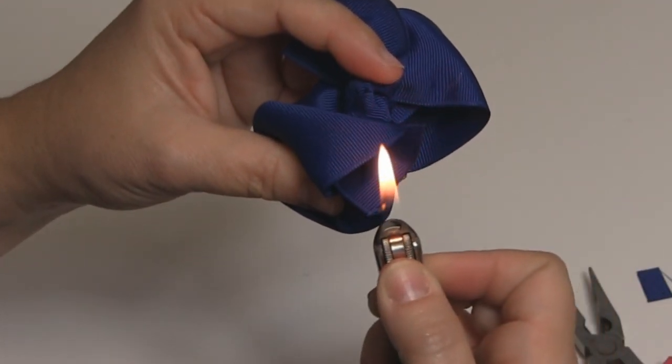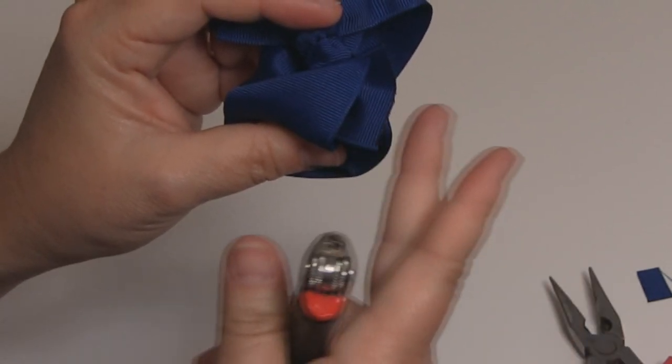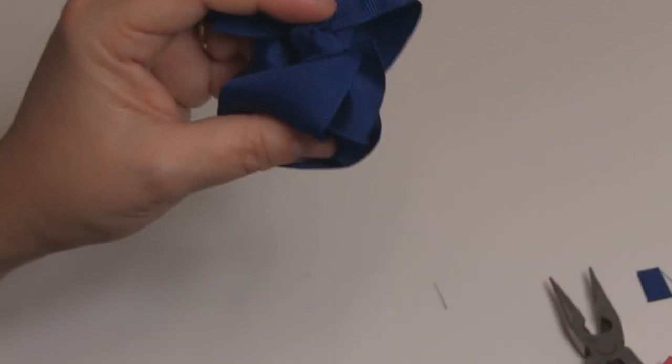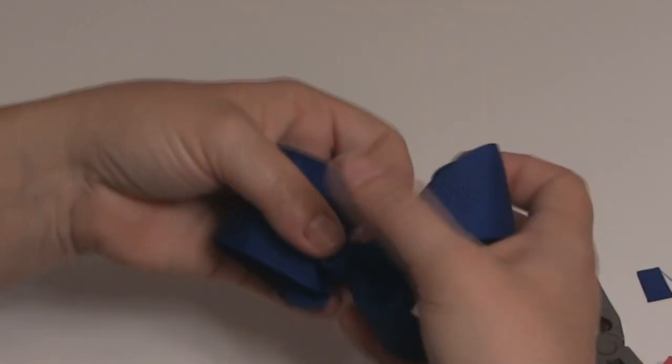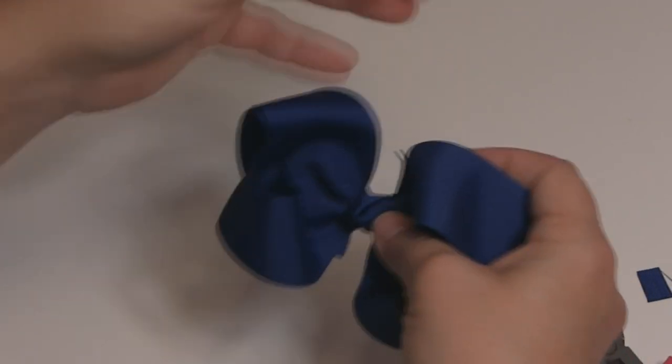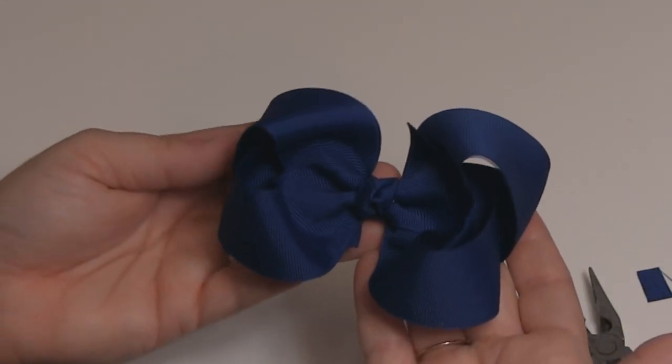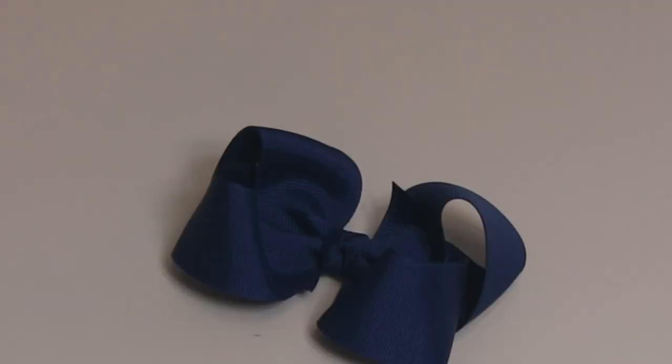I'm going to burn the other side, just like that. So then that ribbon won't fray. And there we go, we have a four inch hair bow. So thanks for watching and we'll see you next time on Bitty Bum Boutique.